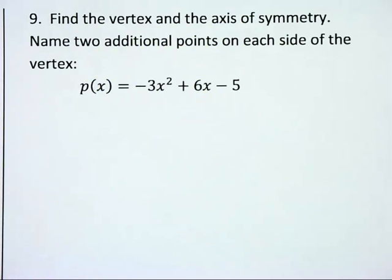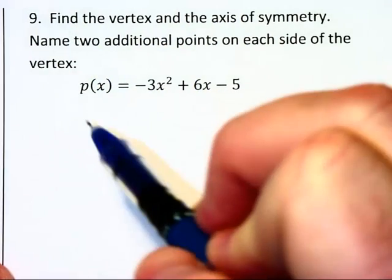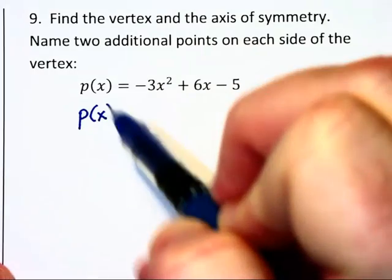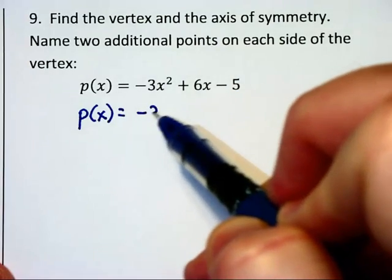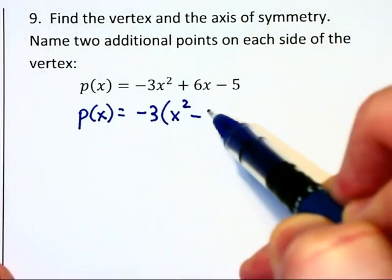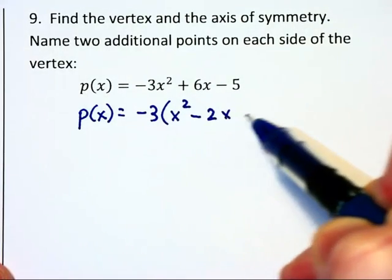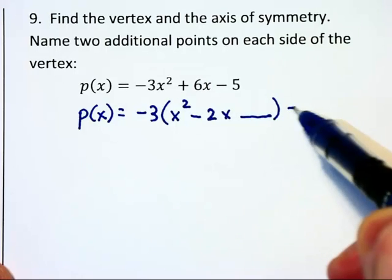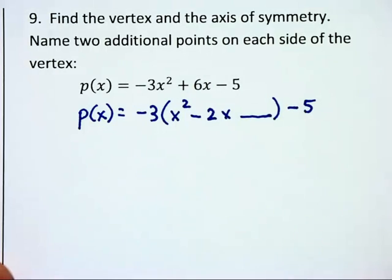Let's do another problem where we have to complete the square. P of x is equal to, I'm going to factor out the negative 3 from the first two terms. Notice this is going to become a minus 2x inside the parentheses. And I'm going to slide the negative 5 over to the right.